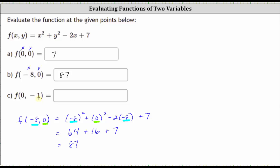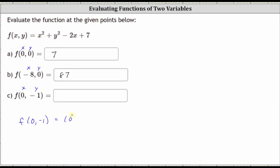Finally, to determine f of zero comma negative one, we substitute zero for x and negative one for y. f of zero comma negative one is equal to the square of zero plus the square of negative one minus two times zero plus seven. Simplifying: the square of zero is zero, the square of negative one is positive one, minus two times zero is zero, plus seven. One plus seven equals eight. f of zero comma negative one equals eight.